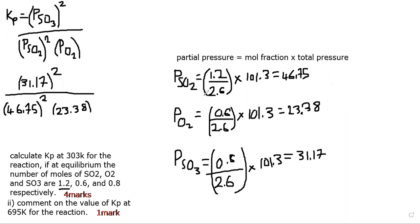After working out the partial pressures for SO2, O2, and SO3, we set up the Kp expression — just like any equilibrium expression, it is products over reactants. The product is SO3, and from the balanced equation there are two moles of SO3, so it becomes P(SO3) squared. The denominator is P(SO2) squared times P(O2), because the balanced equation uses two moles of SO2 as well. You then plug your calculated partial pressures into this expression to get the final answer.